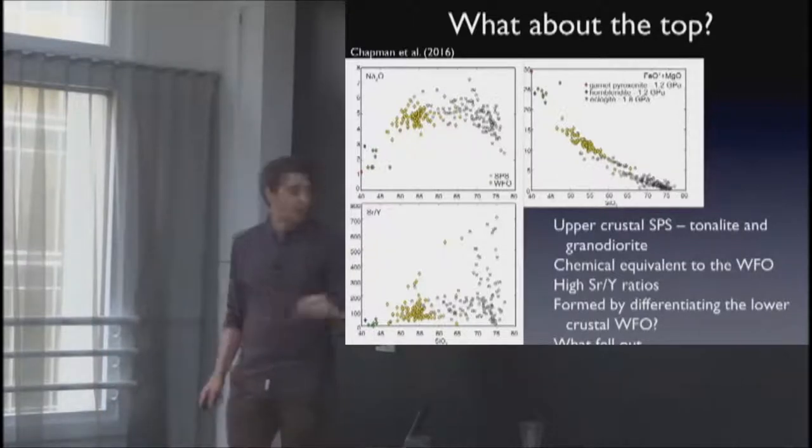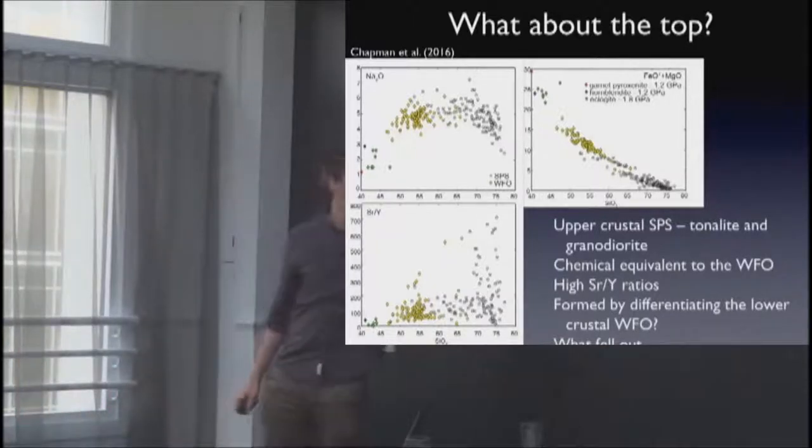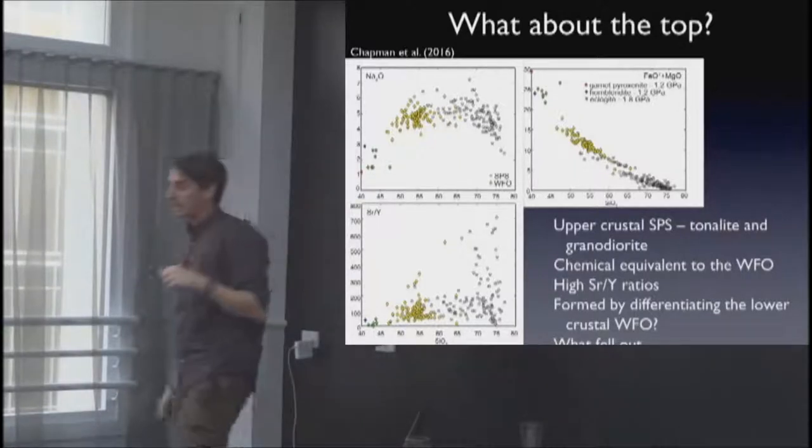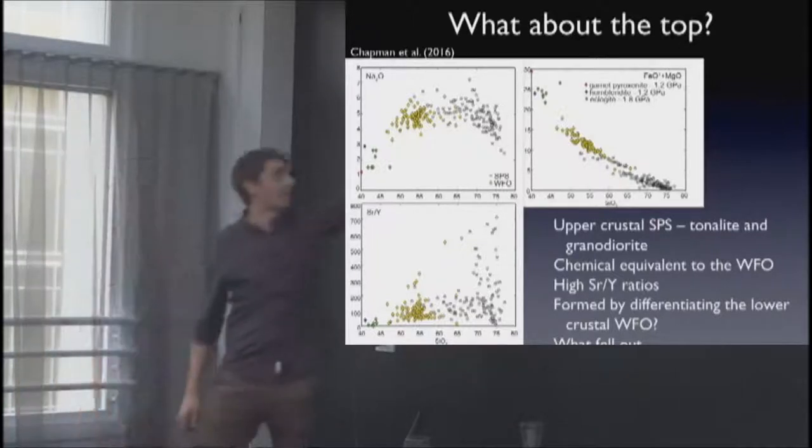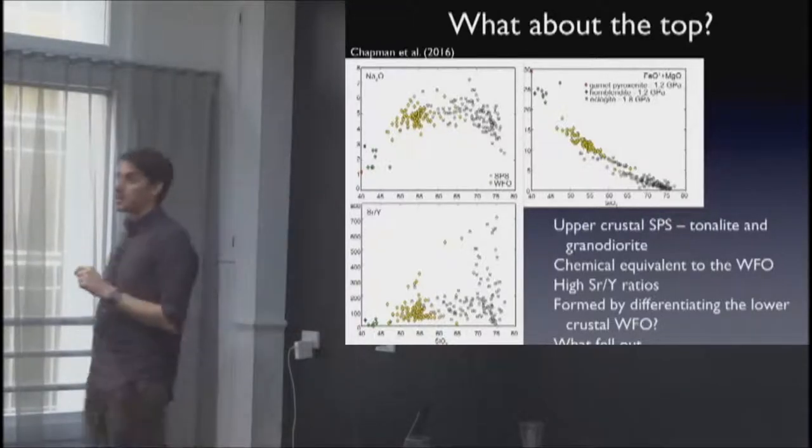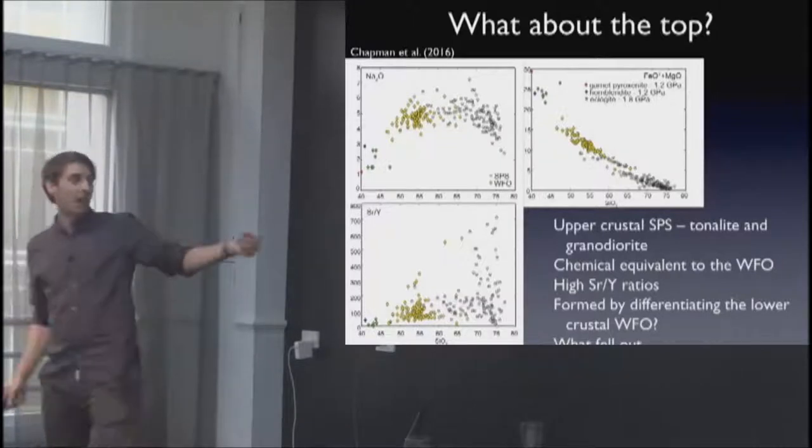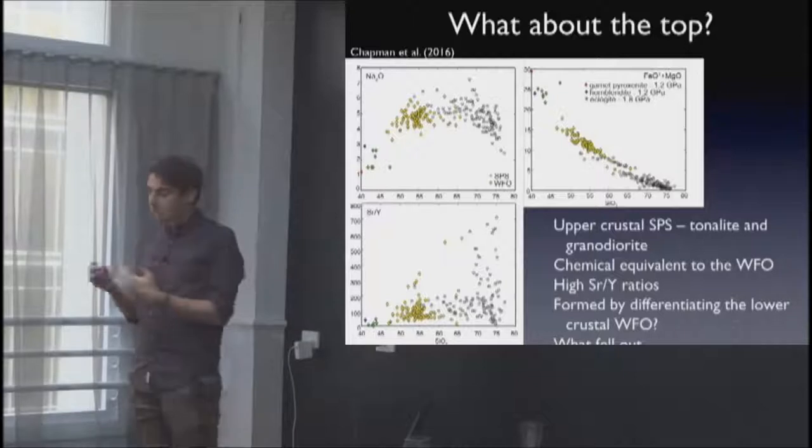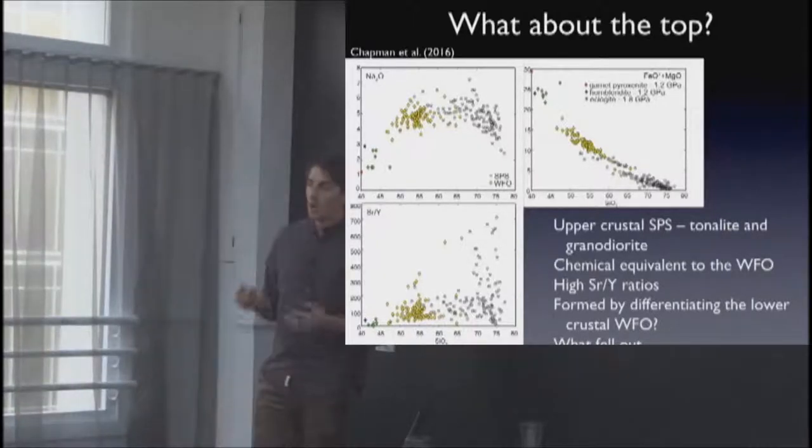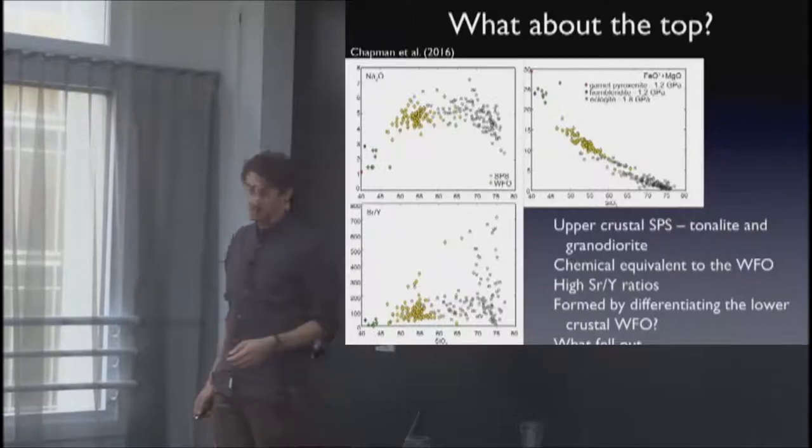Above these structural levels we have mainly tonalite and garnet-diorite plutons as part of the Separation Point Suite and they have broadly curvilinear trends to the western fjordland orthogneiss. They have varying high strontium to ytterbium ratios. It seems like they are related to the western fjordland orthogneiss in some manner and it would appear that they are differentiating to produce the Separation Point Suite. Something I was looking at doing is what has fallen out to produce these upper crustal signatures and what can we see in the western fjordland orthogneiss.